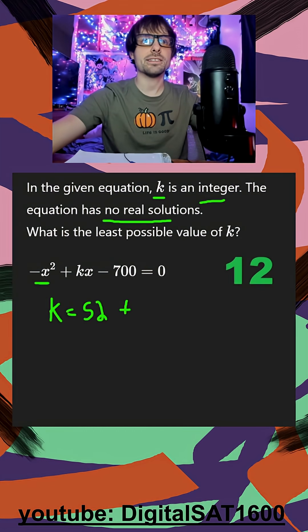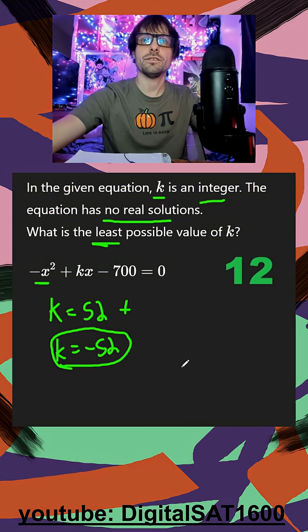So I can hide decimals. I can say k equals negative 52, as like the most negative I can get. They want the least possible, so it's just going to be when my k is negative 52.